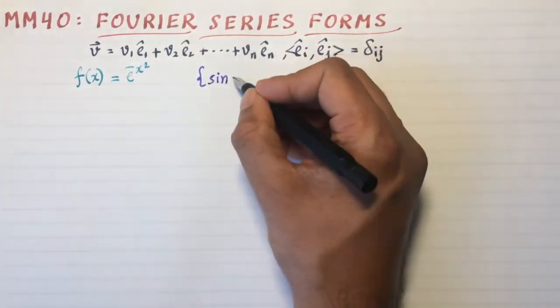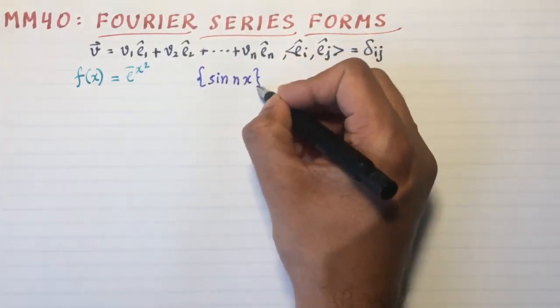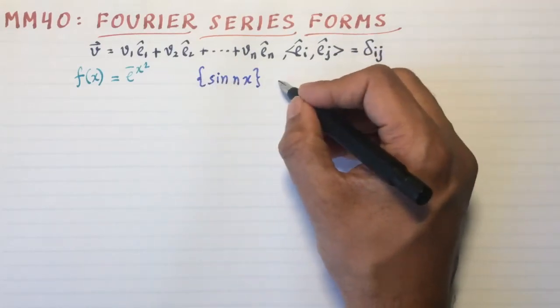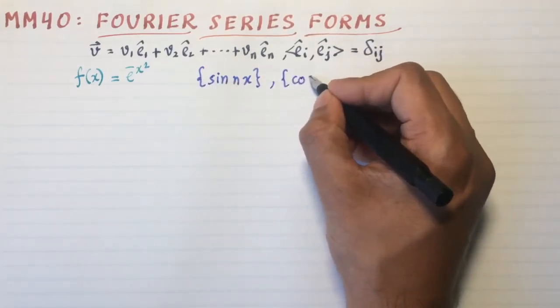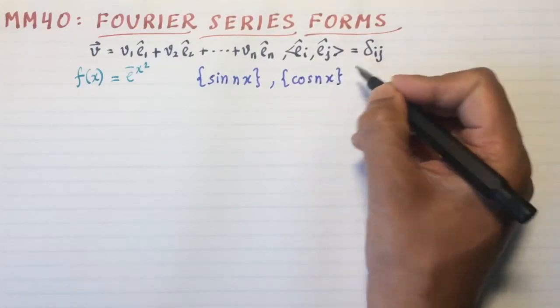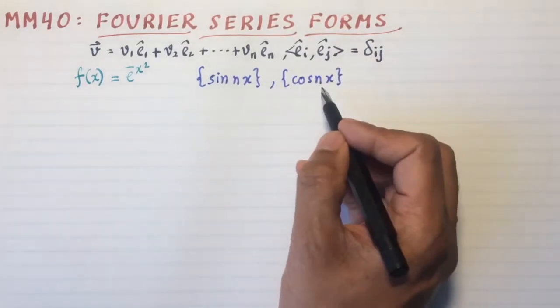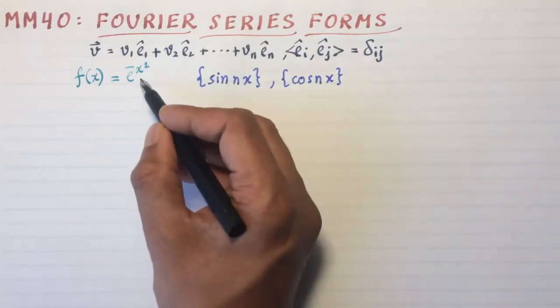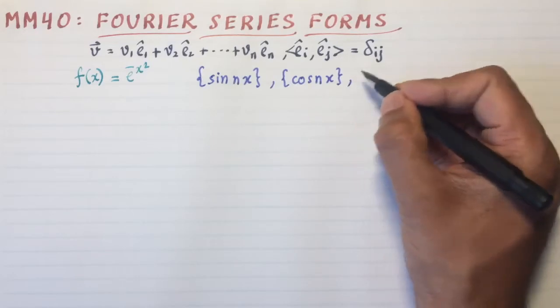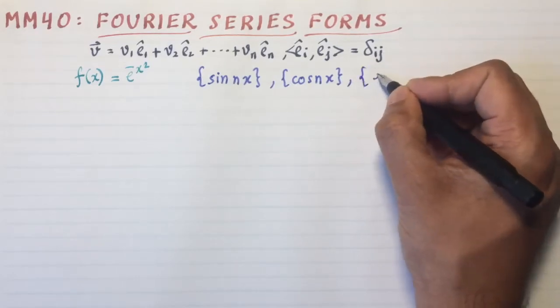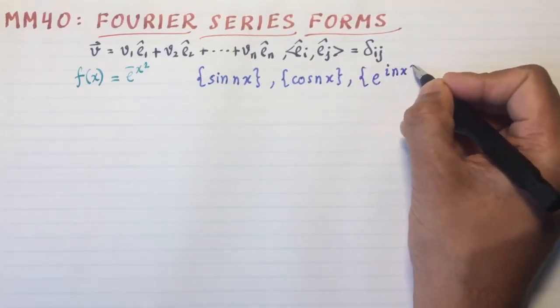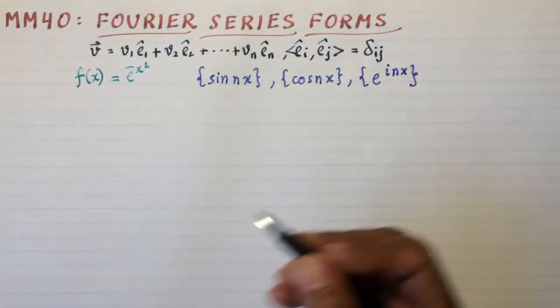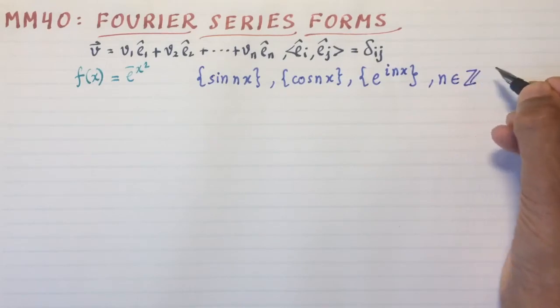And this is the basis of vectors. So think of these e_i's as sin(nx), or you can also have a basis of cos(nx). In fact, if the function is odd, you have to use sin(nx). If the function is even, like e^(-x²), then cos(nx) has to be chosen. Or more generally, using Euler's formula, you can simply use e^(inx) as your basis, where n is an integer, positive or negative.